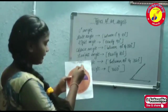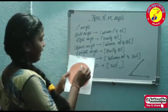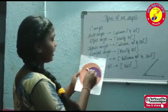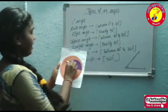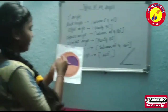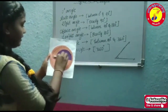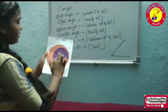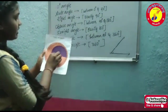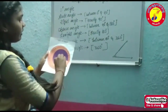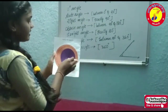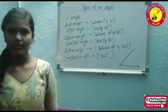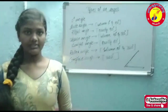90 degrees is called a right angle. 180 degrees is called a straight angle. Between 180 and 360 degrees is called a reflex angle. And 360 degrees is called a complete angle. So friends, these are the types of angles.